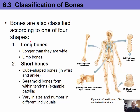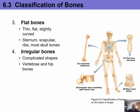Bones can be classified based on their shape and size. Long bones are longer than they are wide. Short bones are roughly cube-shaped, found in the wrists and ankles. There are also special bones called sesamoid bones that form within tendons, like the patella; these can vary in size and number between individuals. Flat bones are thin, flat, and highly curved — they include the sternum, the scapula, and most of the skull bones. Irregular bones have complicated shapes, including the vertebrae and the hip bones.